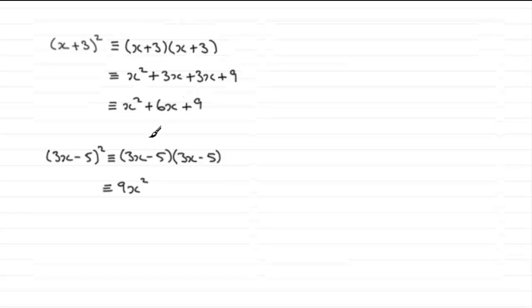And then we get 3x times minus 5, which is minus 15x. But we get it again when we do minus 5 times 3x here. So we get minus 15x. And then we get minus 5 times minus 5. We square that minus 5 and get plus 25.